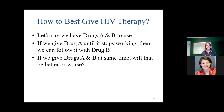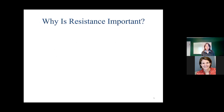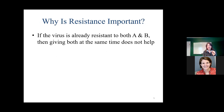Is giving drugs A and B at the same time going to be better or worse than first giving drug A and then, when it stops working, having another drug to use? The answer actually depends on whether resistance is there at the beginning. If the virus is already resistant to both A and B — if you already have some virions resistant to both — then it's actually pretty similar to having a single drug, because you already have a virion that's resistant.